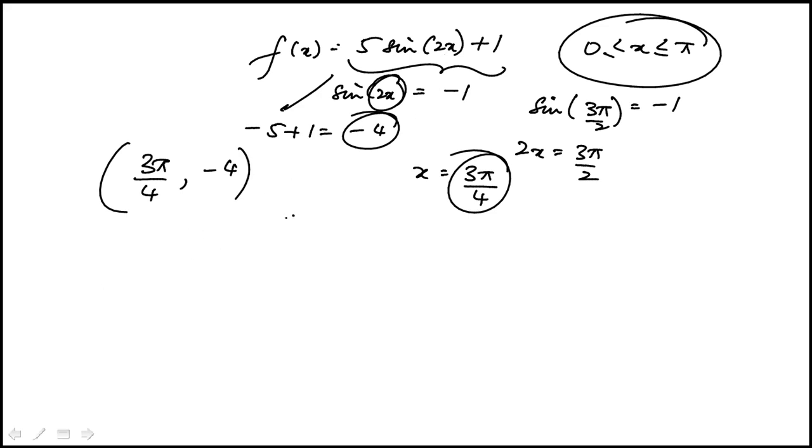The maxima would be when x is π over 4 because in that case sine 2x would be sine of π over 2 which is 1. And the maximum value would be 5 plus 1, 6. So the maxima is π over 4, 6.